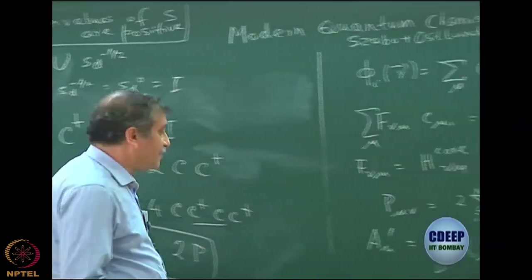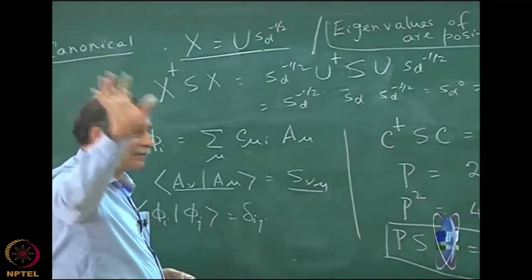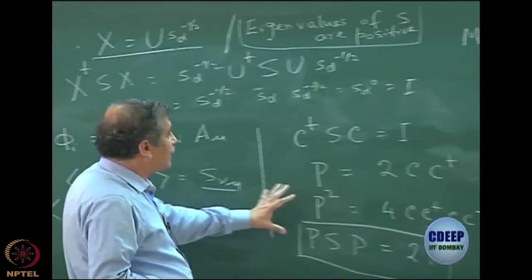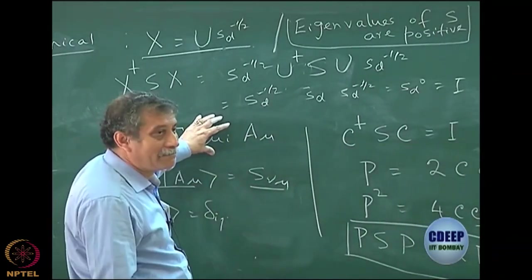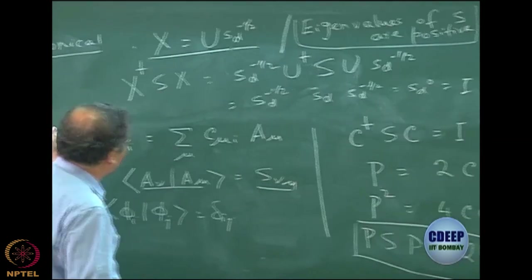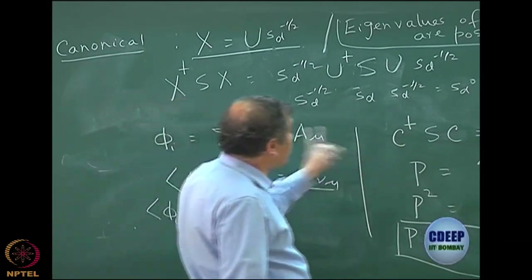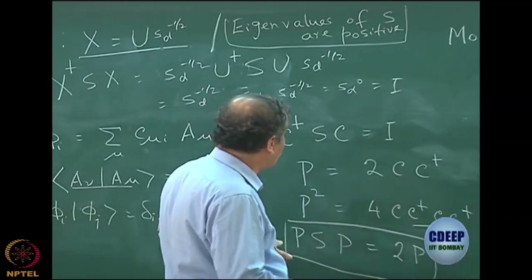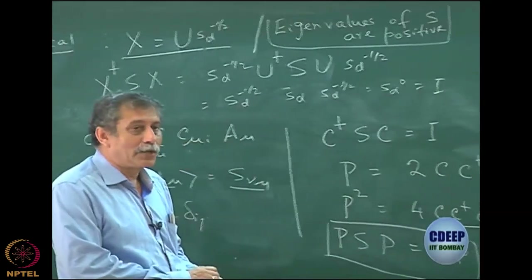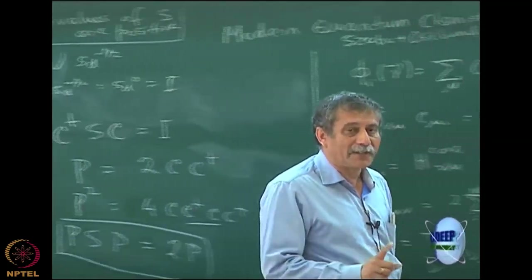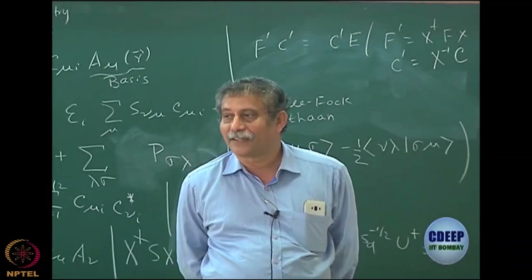PSP = 2P tells a very interesting thing. In case I had worked in an orthonormalized basis and defined my P matrix using that orthonormalized basis — meaning my χ_μ prime, which is an orthonormal basis — I would have had a C prime. The same molecular orbitals are expanded in terms of the orthonormalized basis, so I define my P prime with respect to that C prime. Then of course S is the identity matrix, so P prime S prime equals 2P prime, with S prime = identity. Can you tell me what simple function of P prime would be idempotent?